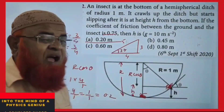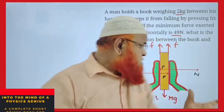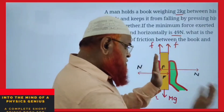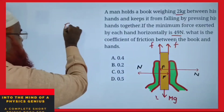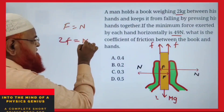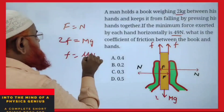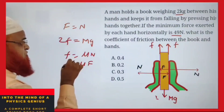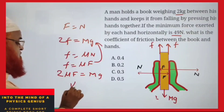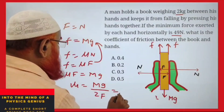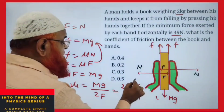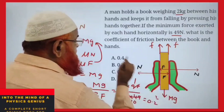A man holds a book between two hands; find the coefficient of friction between book and hands. Applied force equals normal reaction N. Friction acts upward from both hands balancing mg: 2f = mg. Since f = μN = μ×(applied force), substituting gives 2μ×F = mg. Therefore μ = mg/(2F) = (2×9.8)/(2×49) = 19.6/98 = 0.2.